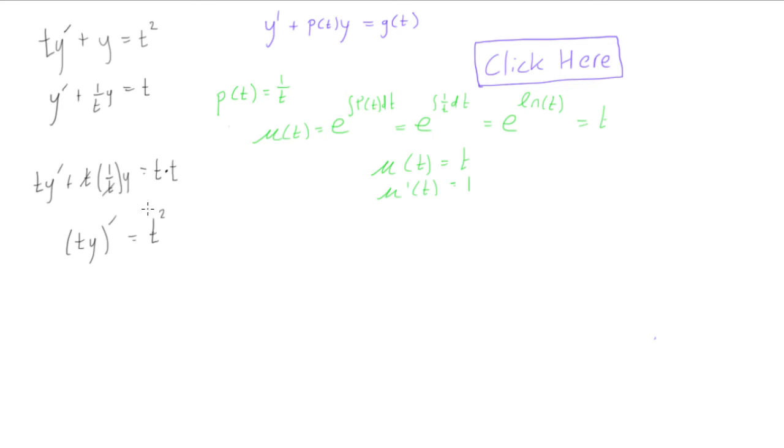So what we're going to do now is we take the integral of both sides with respect to t. So dt, dt. Now when we do this, the left side, the signs disappear. So we get t y is equal to 1 third t cubed.